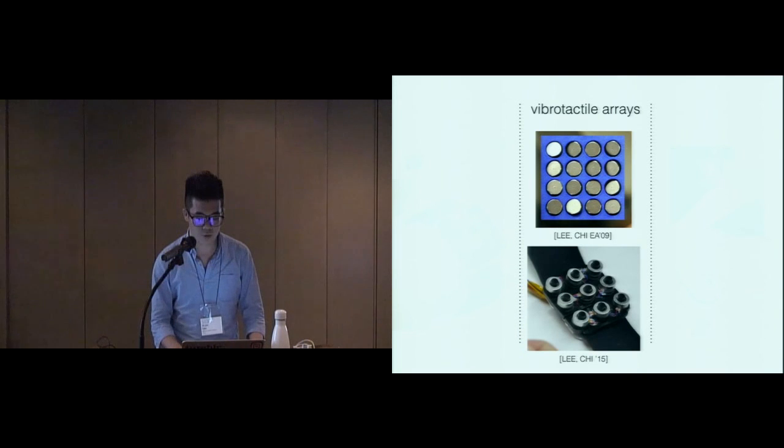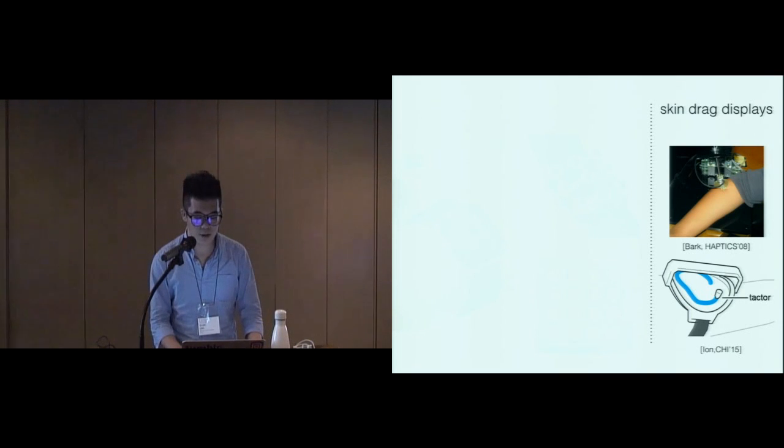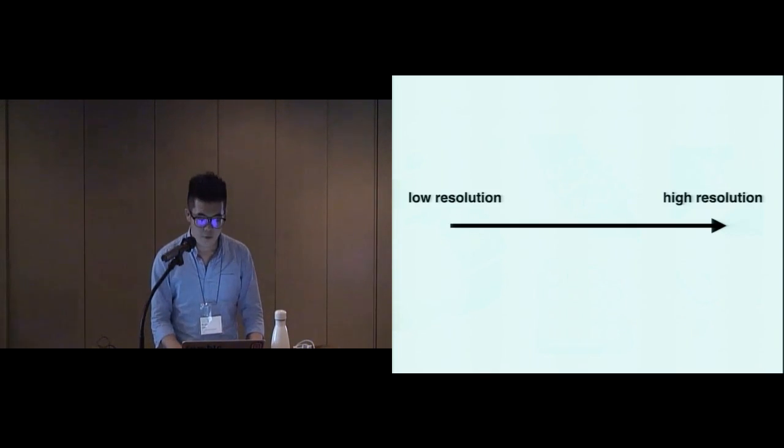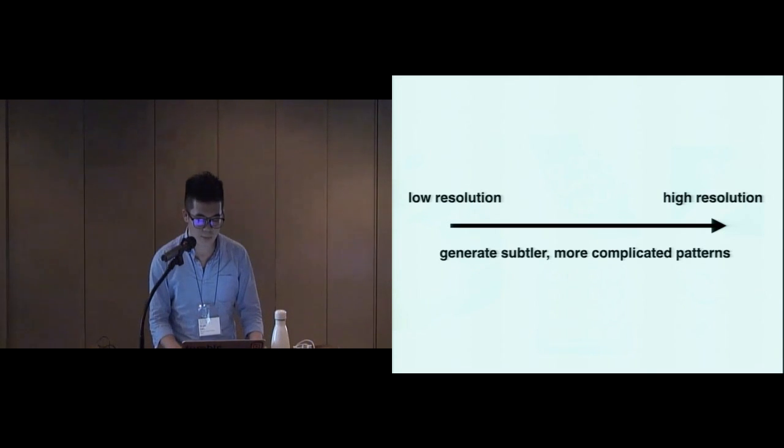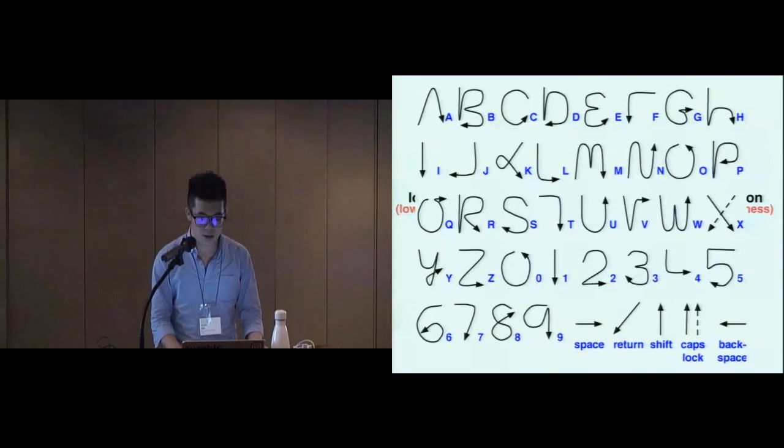Also, adopting vibrotactile array to create continuous pattern is a common approach. For example, you can draw straight lines on 3x3 or 4x4 arrays. More recently, researchers have introduced tactile display based on skin stretch to deliver even smoother and subtler patterns. Viewing the history of building tactile display, we can see the trend of increasing resolution for generating more complicated patterns on such high-density displays. Yes, it seems a reasonable approach, because if we can create more complicated patterns, we can potentially deliver more expressive and intuitive messages, such as English letters and digits.